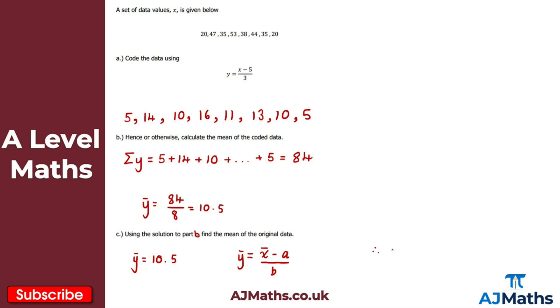So y bar is 10.5, and that's equal to x bar minus a, so that's minus 5, and that's all over b, which is 3. What we've done is we took our data points, subtracted 5, and then divided by 3. So we're working backwards now, so I'm going to times by 3 and then add 5. So x bar here is equal to 10.5 times by 3, and then add 5. We're just solving for x bar.